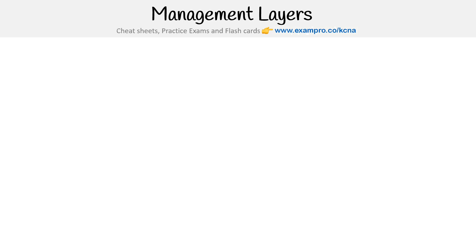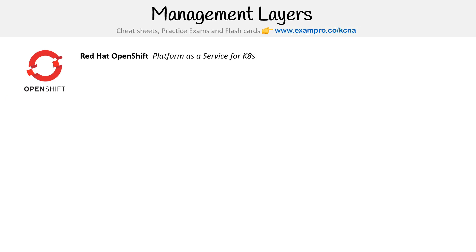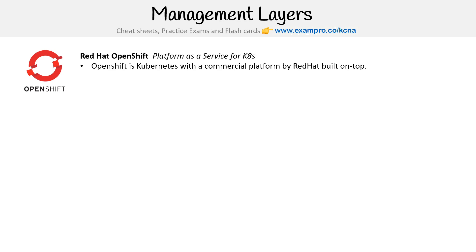There are two tools I want to give a bit more attention to because they're bigger deals: Rancher and OpenShift. Red Hat has OpenShift, and it's a platform as a service for Kubernetes. OpenShift is just Kubernetes — it's a distribution — but the idea is that it's a commercial platform with Kubernetes installed on it, and they've extended a platform around it to make it really easy to use.